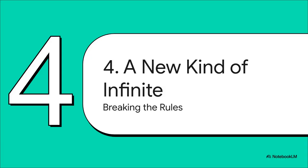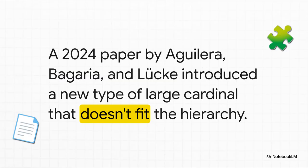For decades, this clean, orderly picture was the working assumption. Anytime a new infinity was found, we'd just find its spot on the ladder. Until, a paper published very recently changed everything. Three mathematicians, Juan Aguilera, Joan Begaria, and Philip Luque, introduced a new type of large cardinal.